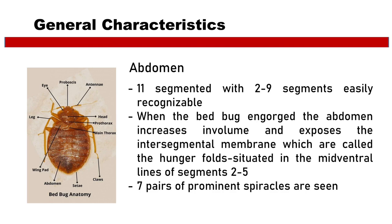Hemelytra pads are oval pads on the mesothorax that can be viewed laterally; they appear wingless. Abdomen: the abdomen of Cimex lectularius has 11 segments, with segments 2 to 9 easily recognizable. When the bed bug is engorged, the abdomen increases in volume and exposes the intersegmental membrane, called the hunger folds, situated in the mid-ventral lines of segments 2 to 5. Seven pairs of prominent spiracles — breathing holes of arthropods — are seen.